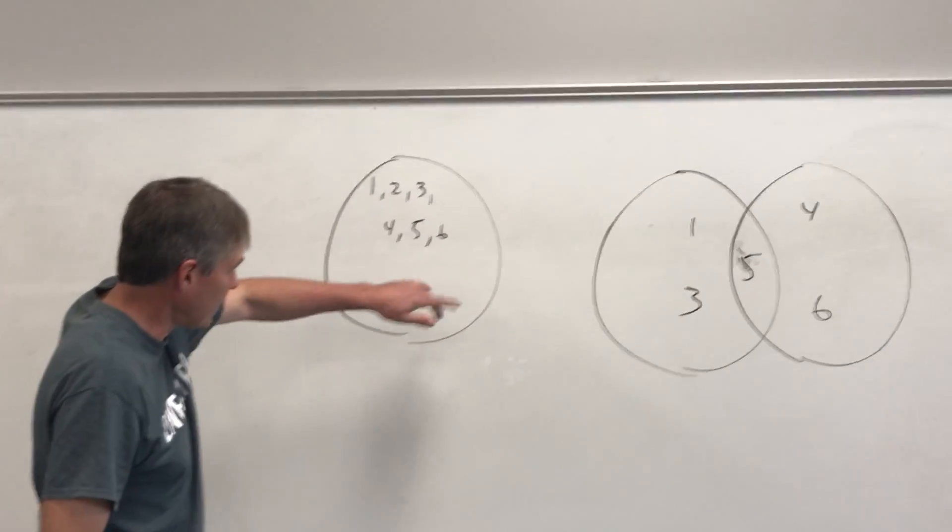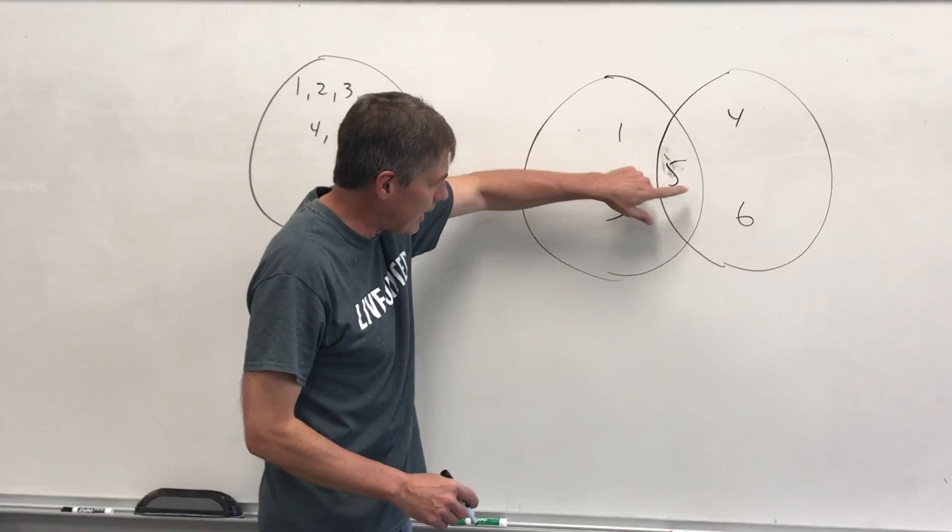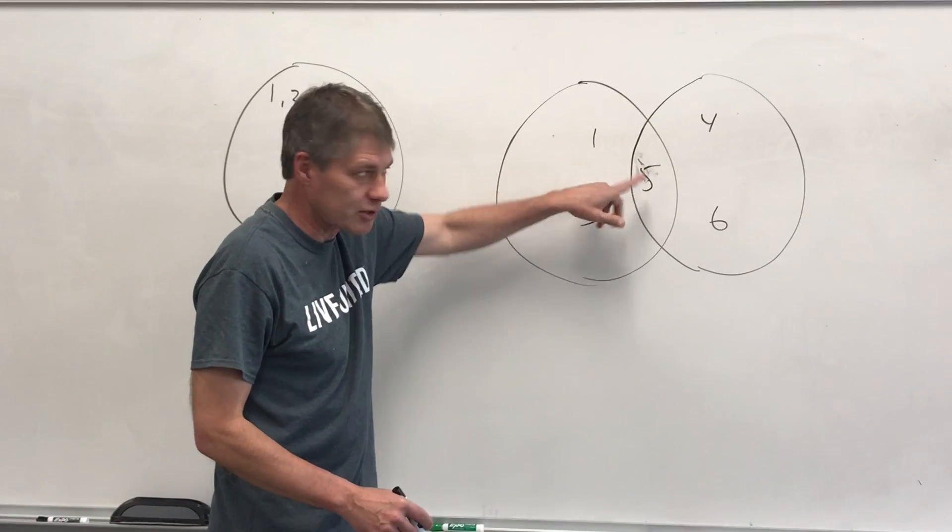So I was talking about the union of this one. It would be 1, 3, 4, 5, 6. If I was talking about the intersection, it would be when they have something in common. It should be the 5.